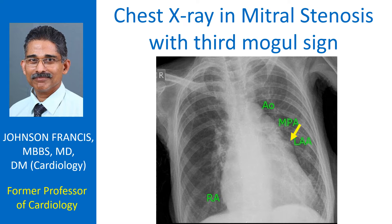The main pulmonary artery segment is usually concave on a normal chest X-ray. Here it is seen as convex, bulging to the left.